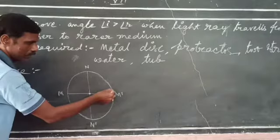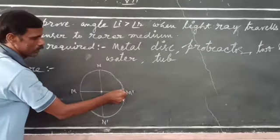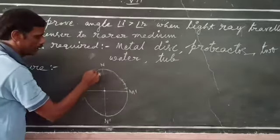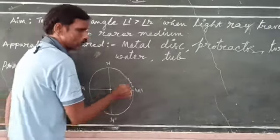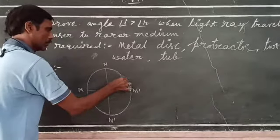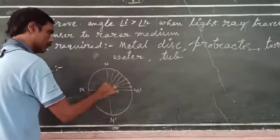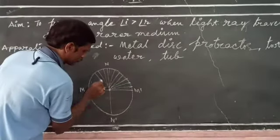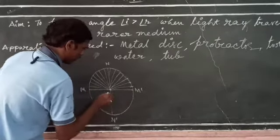Now mark 0, 10, 20, 30, 40, and so on up to 180 degrees, and similarly on the other side from 0 to 180. This way we will get a circular protractor marked on the metal disc.